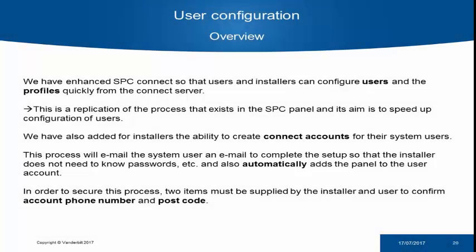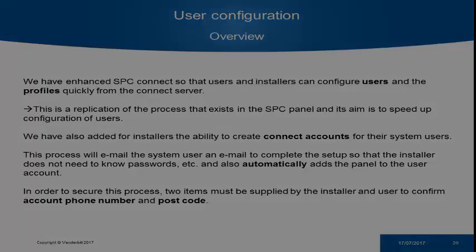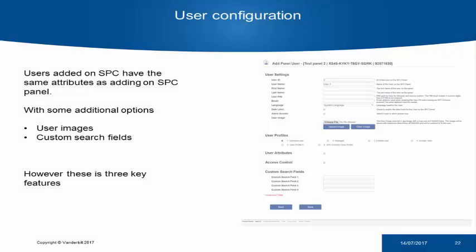User configuration. One of the main enhancements we've made in SPC Connect is the user configuration. The SPC webpage has always provided a powerful tool for user configuration — it's quite quick and easy to set up users on it. What we have done to unify the platform more is to replicate this process inside of SPC Connect, which allows us to leverage more of SPC Connect and add additional options. When we look at the SPC Connect edition of users, we can see there are some very similar fields to the SPC panel; however, there are also some new ones — for example, first name, last name, email address, and custom search fields. These have been added to support three key new features.